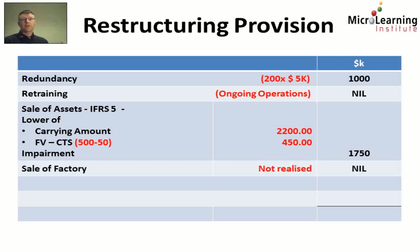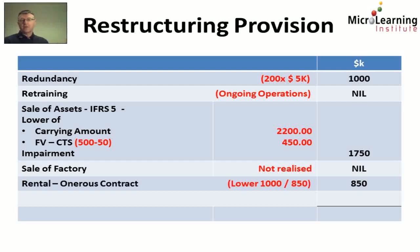Next up we look at the sale of the factory, but the sale of the factory is an expected sale in the future, so this has not been realised in the past and it cannot be considered as part of the provision. The rental is what's called an onerous contract. IAS 37 tells us that when we have an onerous contract, we can recognise a provision for the lower of either the costs of continuing to rent or the costs of cancelling the rental arrangement. The present value of the future lease payments — i.e. if we continue to rent — is $1 million. However, the lessor has said they will accept $850,000, which would be due for payment on the 30th of April 20X3 if we cancelled the lease. So in this case we can recognise a provision for the lower of these two numbers, being $850,000.